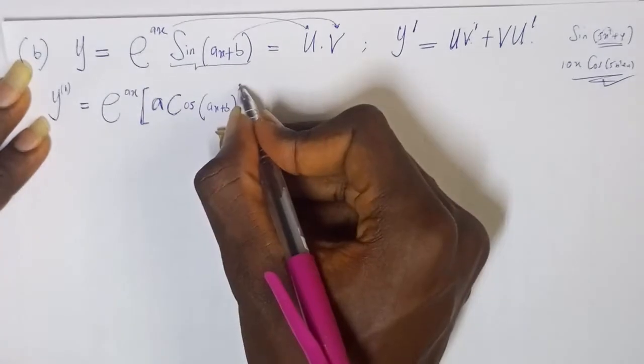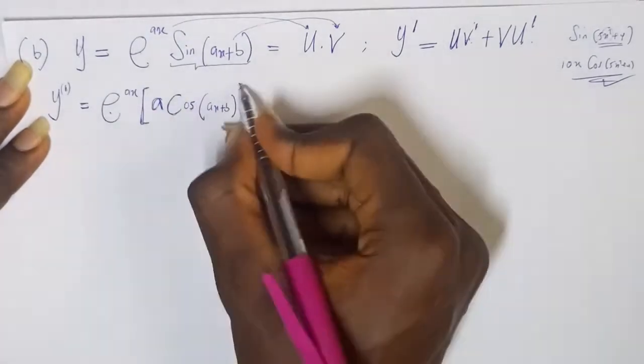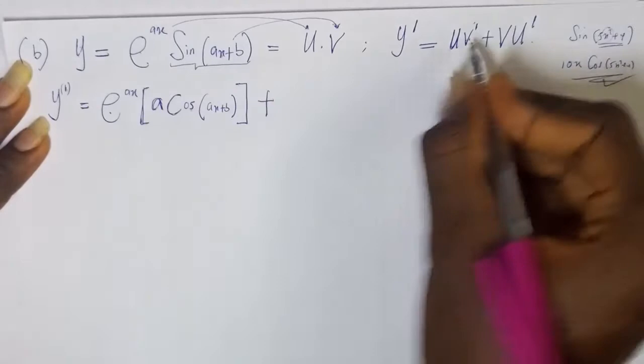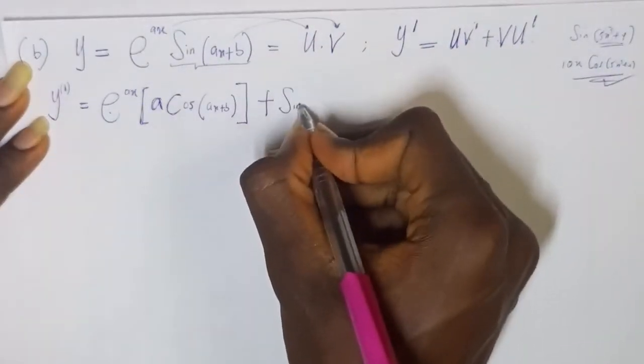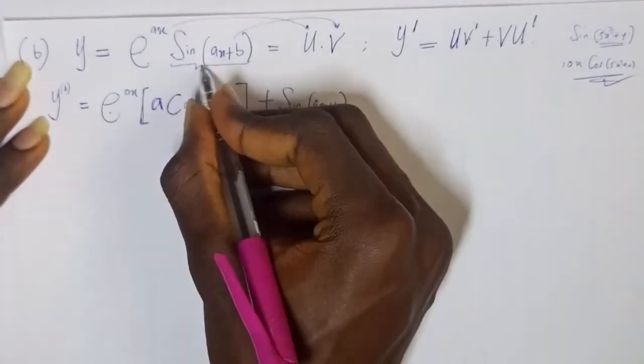Now, since we already have this, this is for uv'. Then, the next thing is plus v times u'. v is given as sine of ax plus b from the question.